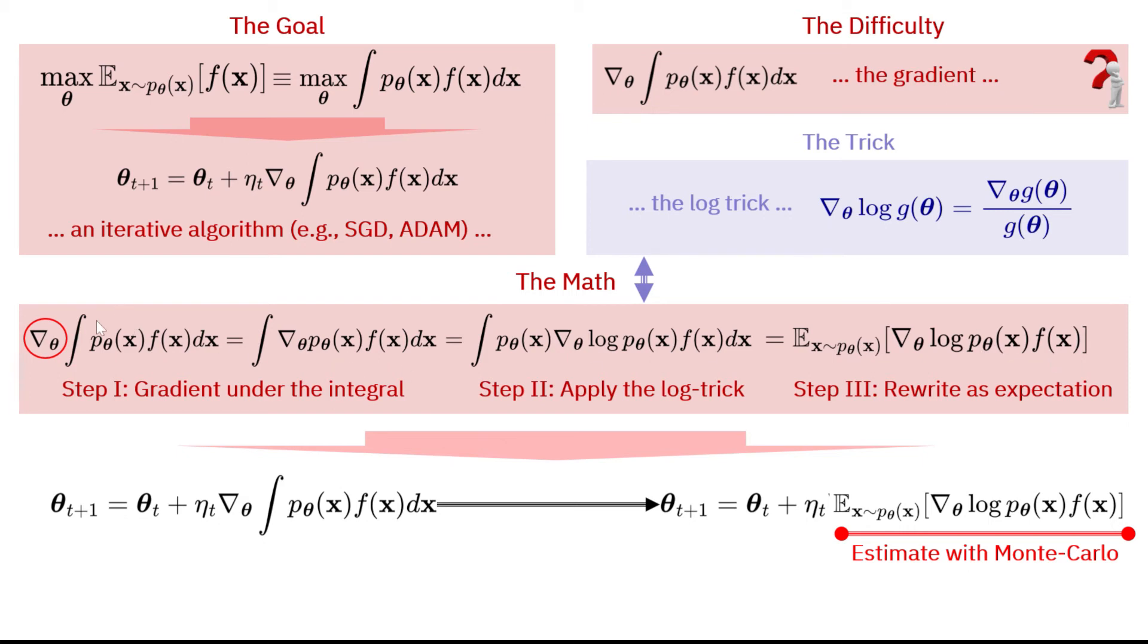So, let's recap. What we've done is the first step, we took the gradient under the integral. The second step, we called p theta to be g of theta. We cross-multiply, substituted in step two. And then, in step three, we just rewritten that as an expectation, given the definition of the expectation.